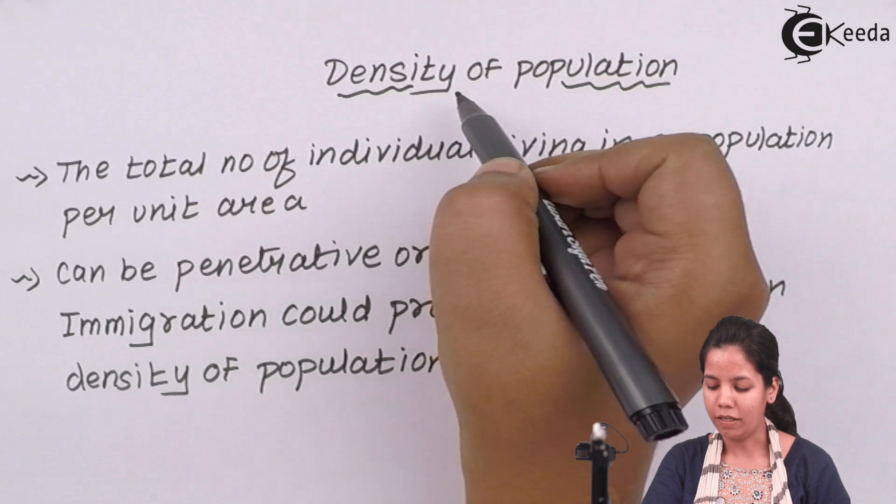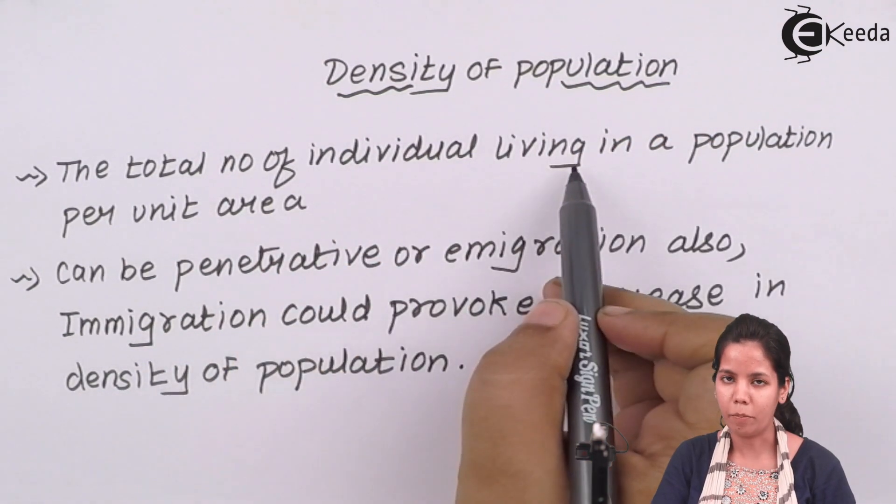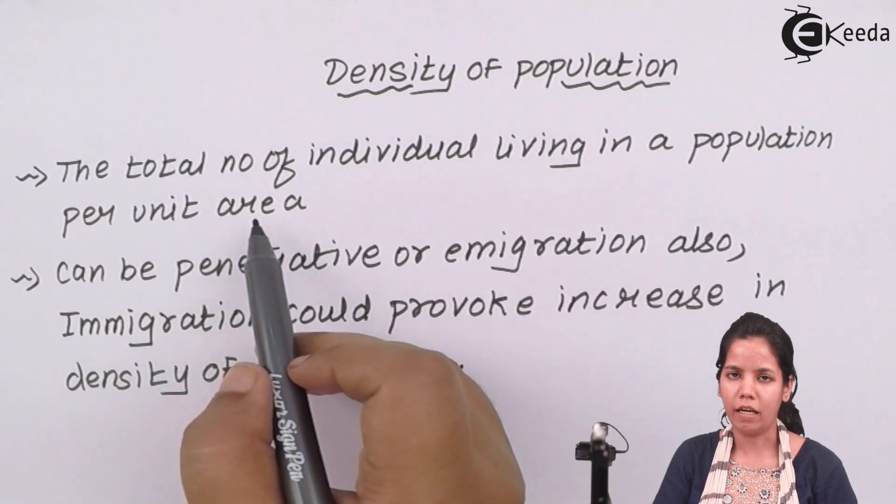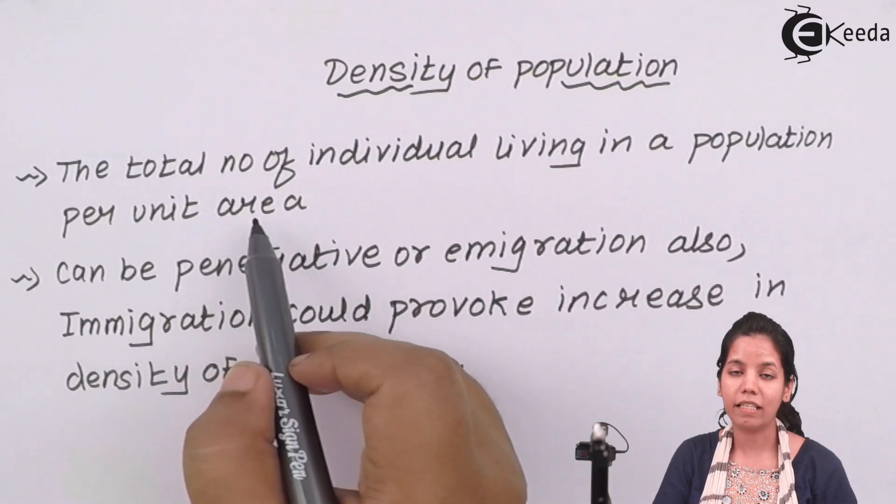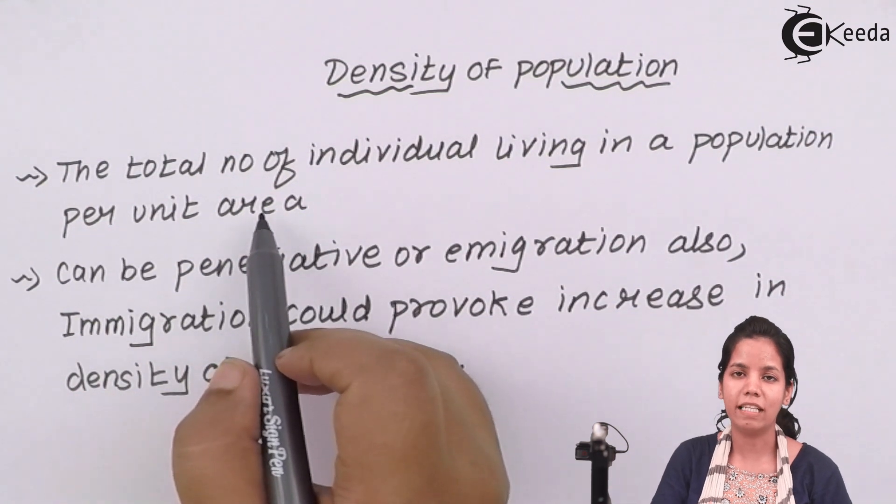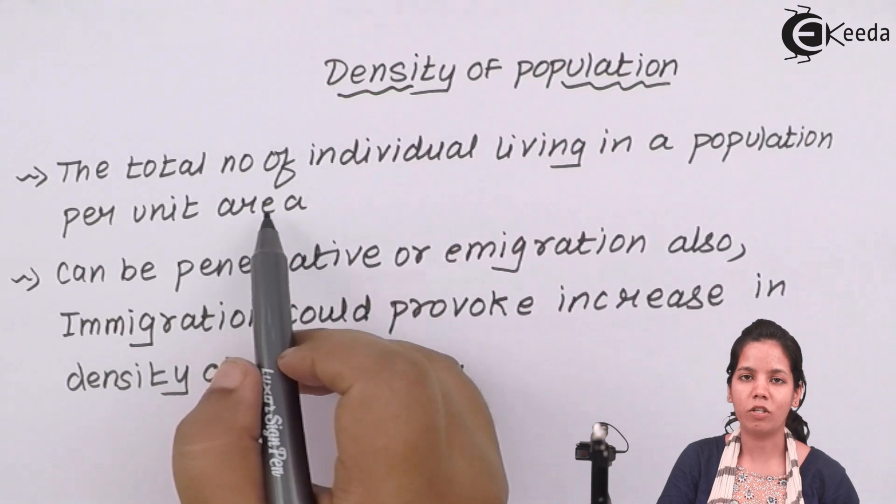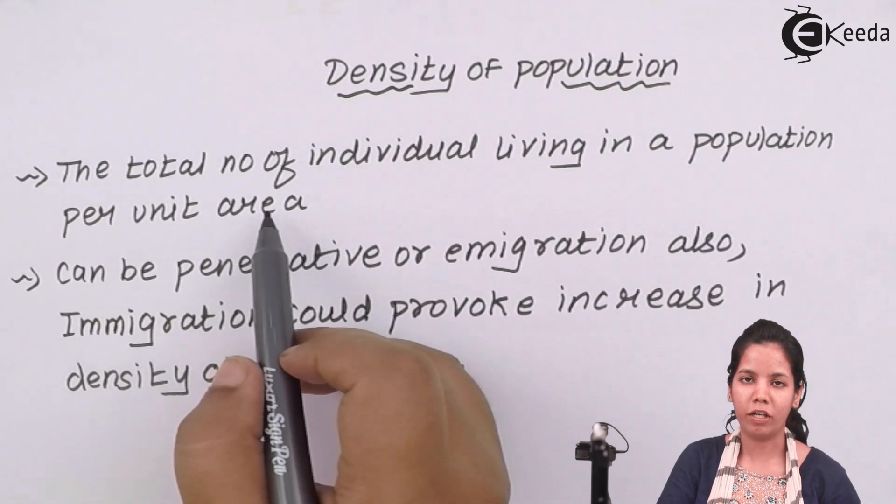Density of population is the total number of individuals living in a population per unit area at a particular place. For example, Mumbai is the most densely populated state in India and this is due to its commercialization, the type of trade that takes place, the lifestyle it has, and the type of job opportunities Mumbai offers to you.